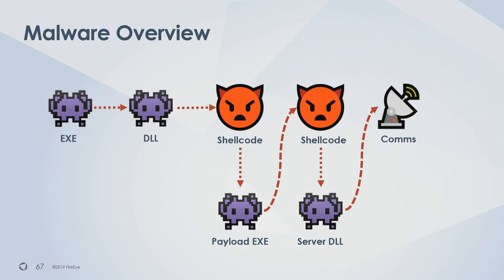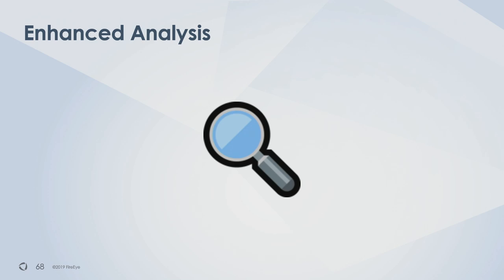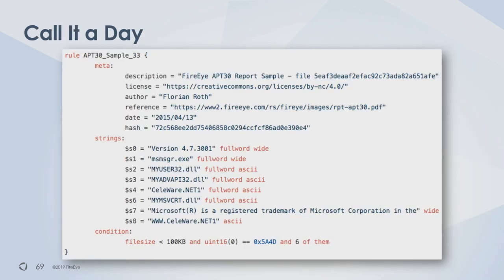With Flare research, we now have access to both shellcode payloads and the reflectively loaded payloads. Plugging the network indicator cellaware.net into Google, the first result was a Yara signature associated with a FireEye APT30 report — the sample is potentially being used in APT33 and beyond. For those who caught it, the APT41 report was just dropped yesterday.